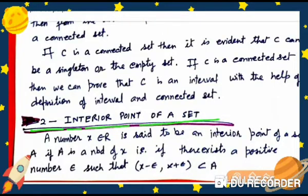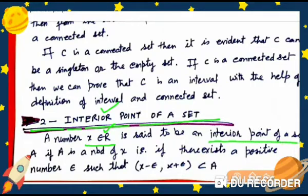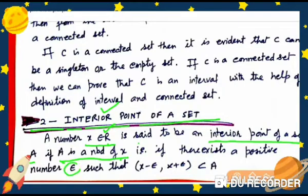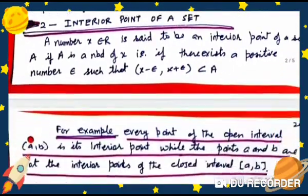Interior point of a set: A number x belonging to R is said to be an interior point of set A if A is a neighborhood of x — that is, if there exists a positive number epsilon such that the interval (x − ε, x + ε) is a subset of A. Then x is an interior point of A.